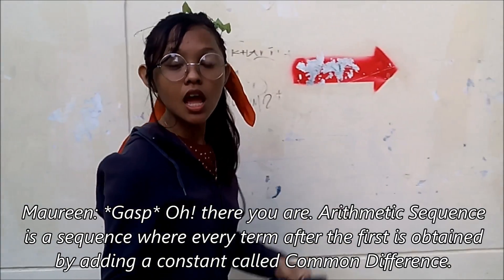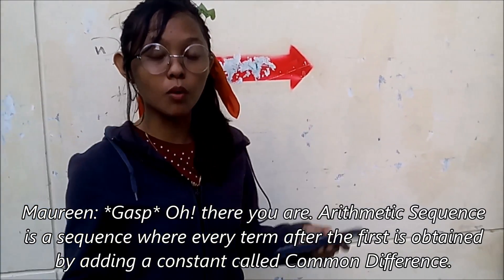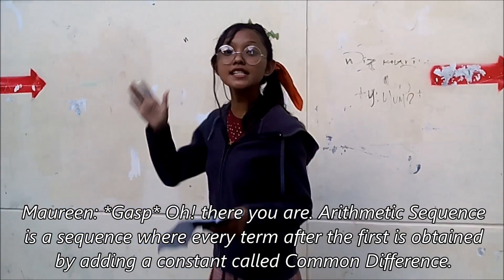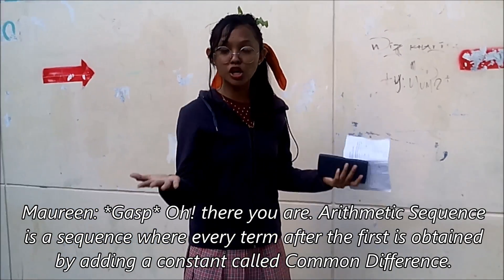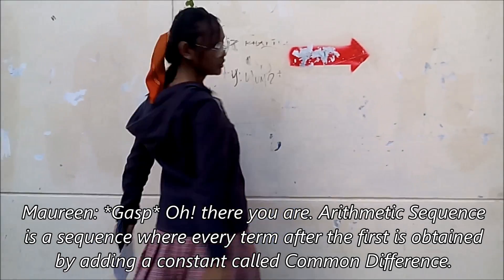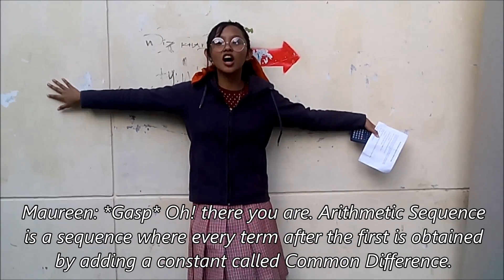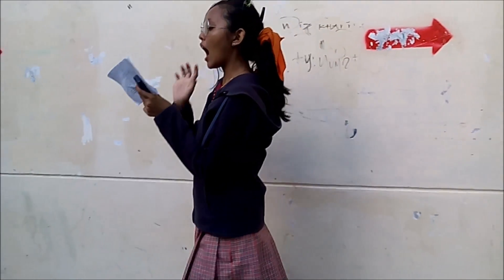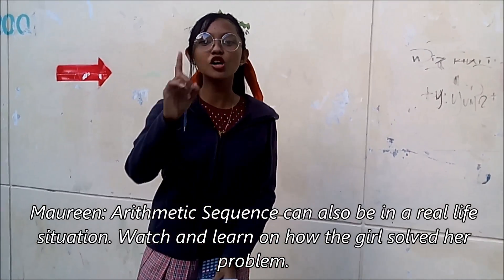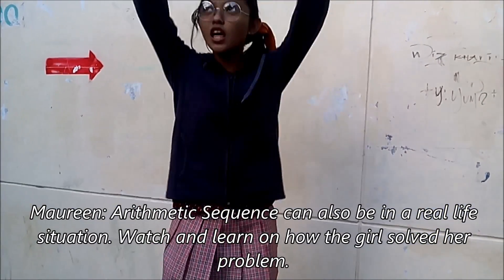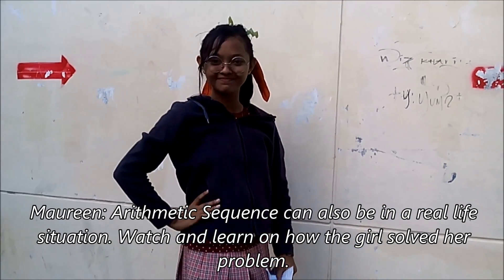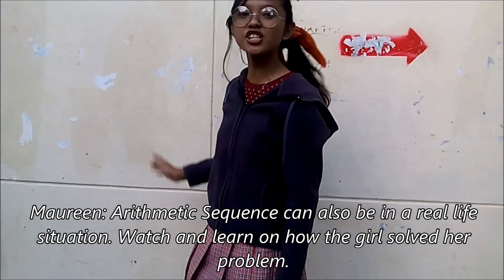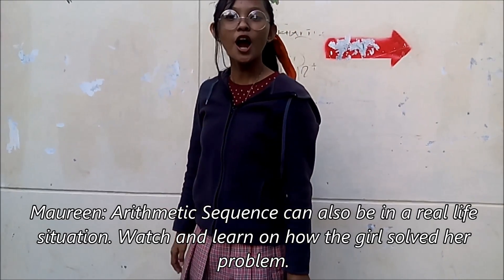An arithmetic sequence is a sequence where every term after the first is obtained by adding a common difference. An arithmetic sequence can also be applied to a real-life situation. Watch and learn how to solve this problem.